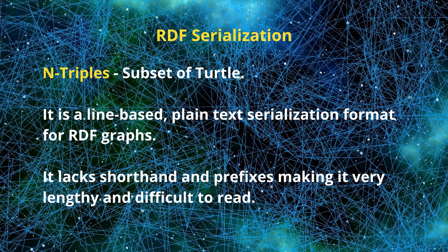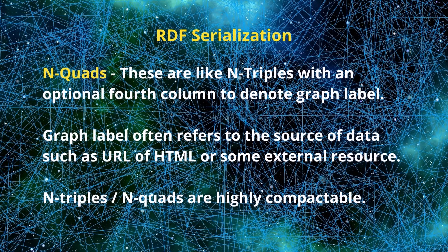N-Triples is a line-based plain text serialization format for RDF graphs. It was designed to be simpler than N3 or Turtle, making it easier for software to parse and generate. However, since it lacks shorthand and prefixes, the format can be very lengthy and difficult to read. N-Quads are like N-Triples but have an optional fourth column that can be used to denote a graph label, which often refers to a source of data such as a URL or an external RDF source. N-Triples and N-Quads are highly compactable, and Turtle or N3 parsers can also be used to parse them as their subsets.